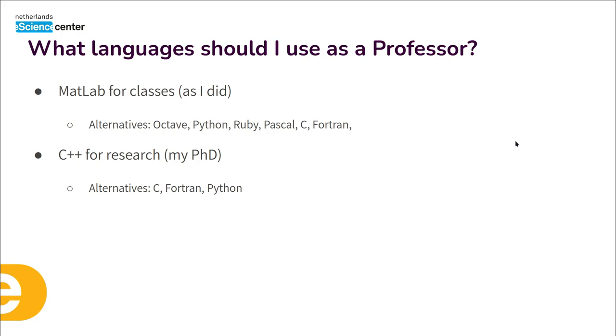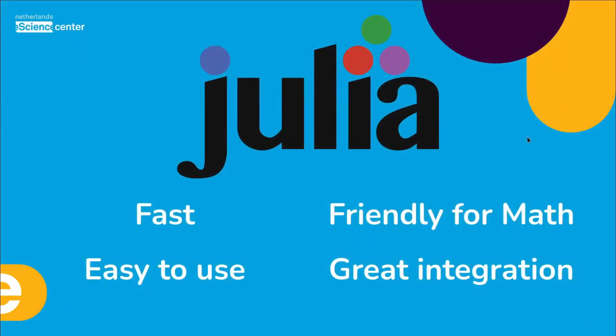In some cases people use Python when they don't have a requirement for speed. So I was looking for an alternative for that as well. The language I chose for both tasks was Julia. The reasons I chose it are essentially four pillars: Julia is fast, Julia is friendly for mathematical things, Julia is easy to use, and Julia has great integration — here I'm thinking about lower-level languages, but it also integrates with other languages.